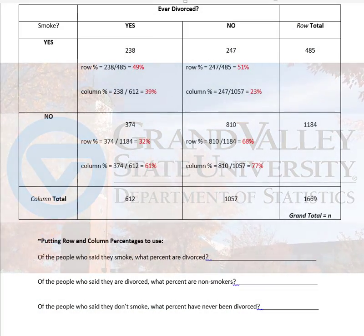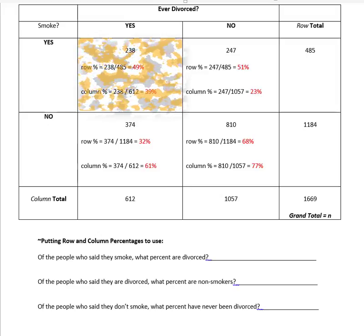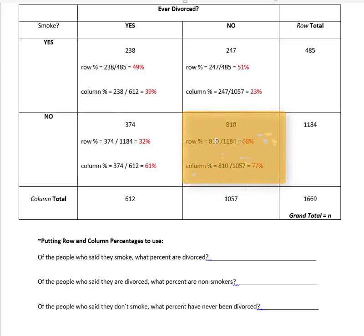In the last video we were looking at how to calculate row and column percents when we had a contingency table. A contingency table looks at two categorical variables collected on one person. The table you're looking at right now shows smoking status and whether a person has ever been divorced, displaying the unique combinations: yes smoker/yes divorced, yes smoker/no divorced, no smoker/yes divorced, and no smoker/no divorced.